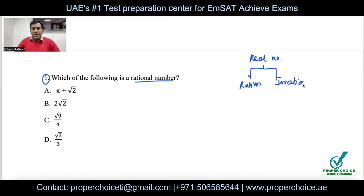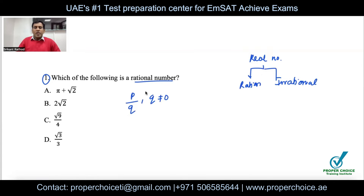Which type of numbers are called rational numbers? A number that can be represented in the form of a fraction — for example p/q, provided q is not equal to zero — is called a rational number. Such numbers should also have a terminating decimal, or if non-terminating, the decimal must be recurring or repeating.